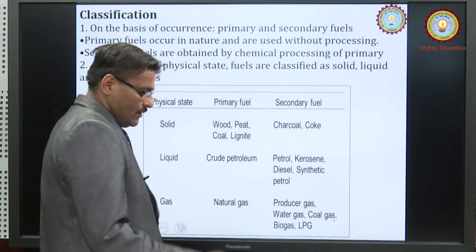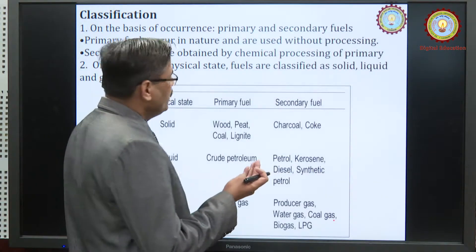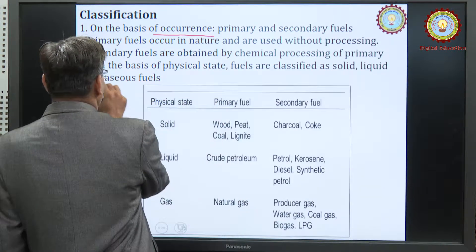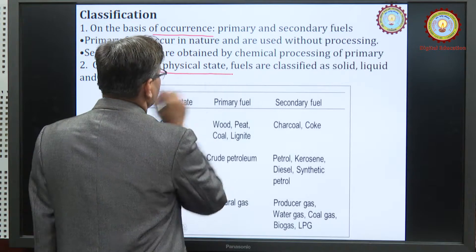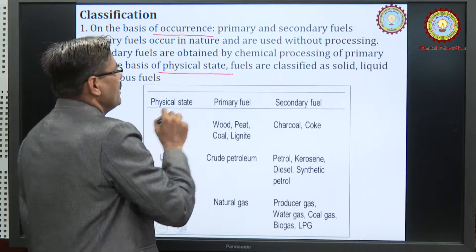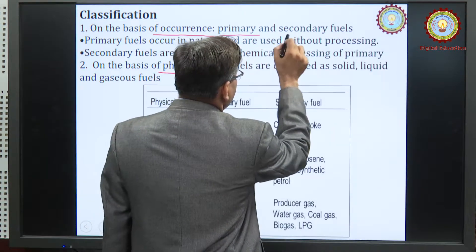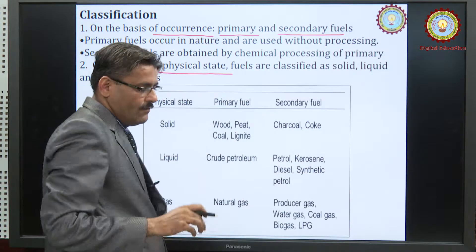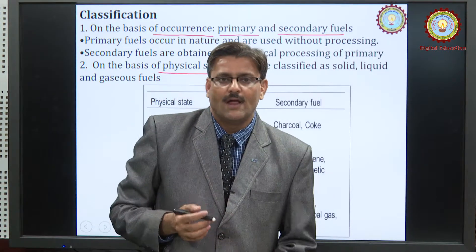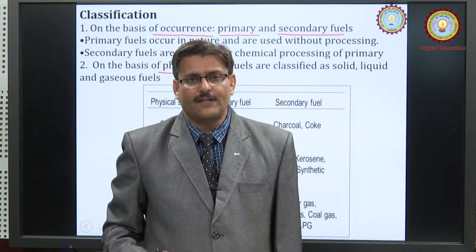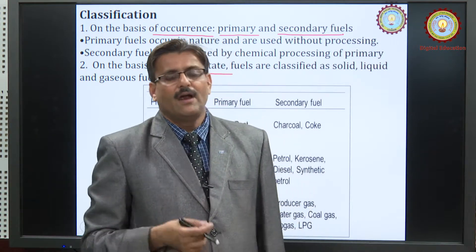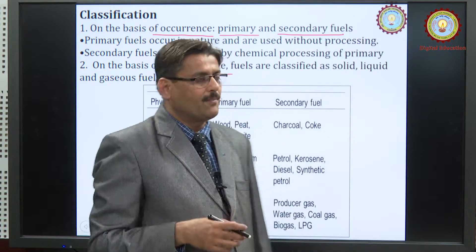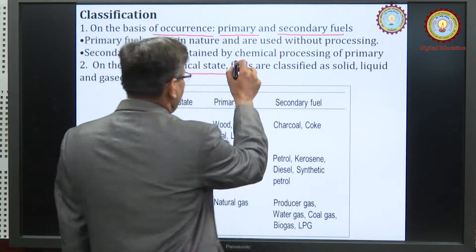Classification of fuel: fuel is classified on the basis of its occurrence and on the basis of its physical state. On the basis of occurrence, fuels are primary and secondary. Primary fuels are wood and gaseous fuels obtained from nature and used as such without any processing. Secondary fuels are derived from primary fuels by chemical processing.